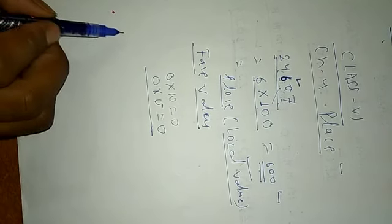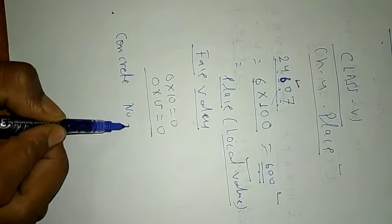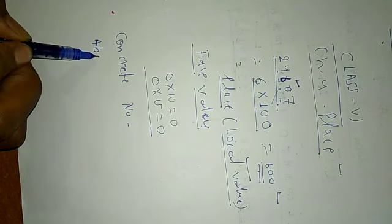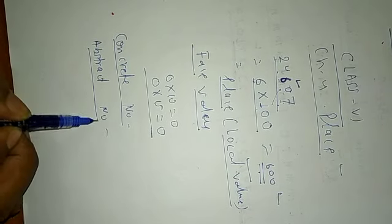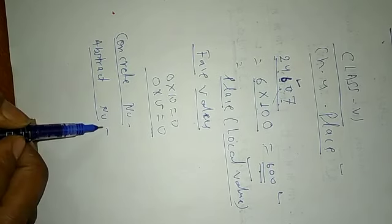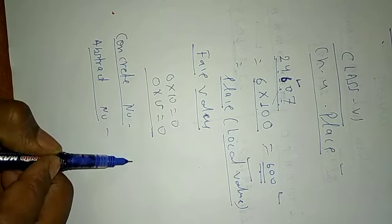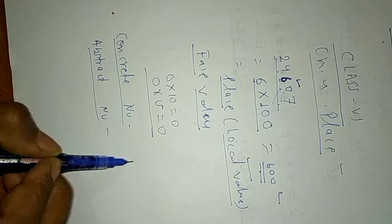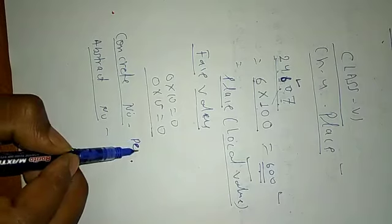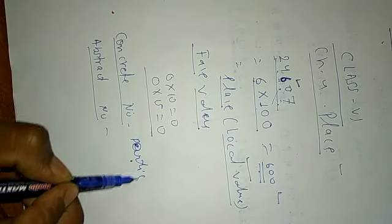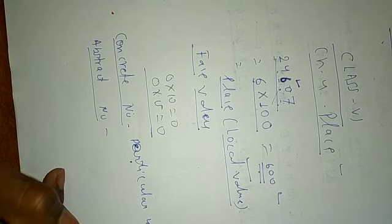Now let's discuss numbers. There are two types of numbers: concrete number and abstract number. A concrete number is a number which refers to a particular unit and is meaningful.